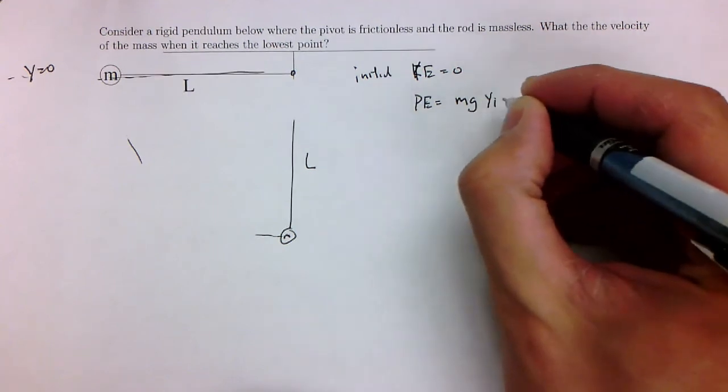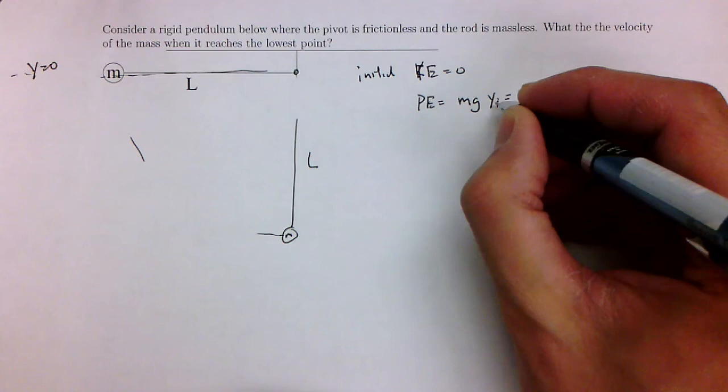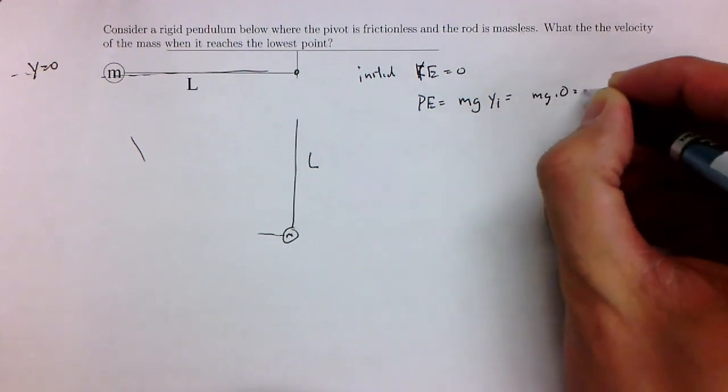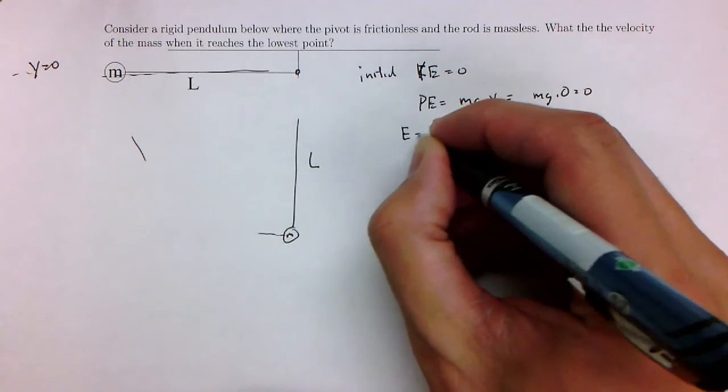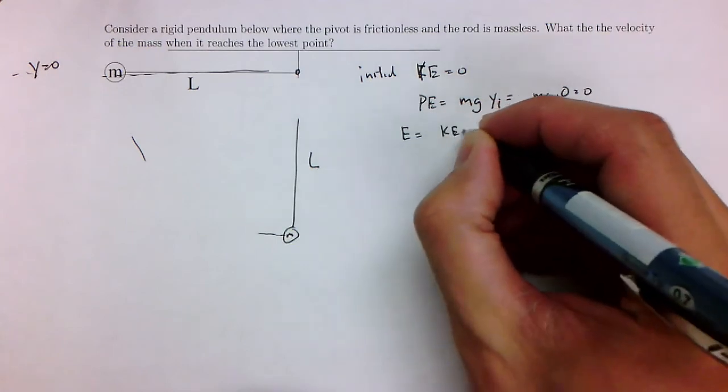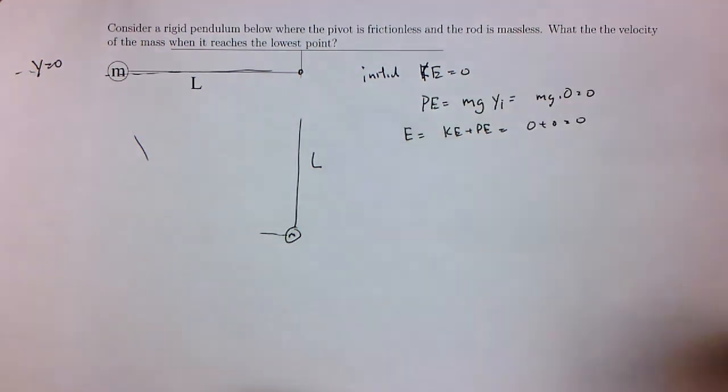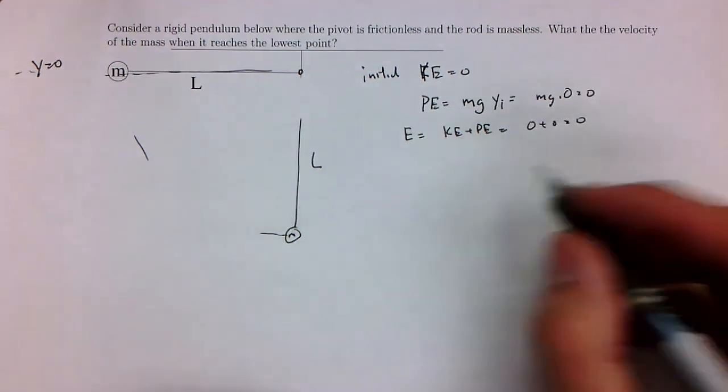And this is going to be equal to y1. It's going to be zero. So it's going to be mg times zero is zero. So the total energy is the kinetic energy plus the potential energy. This is going to be zero plus zero is equal to zero. So that was informative.